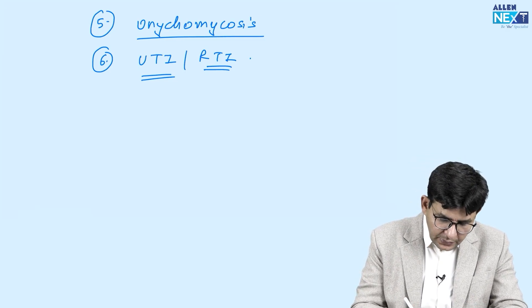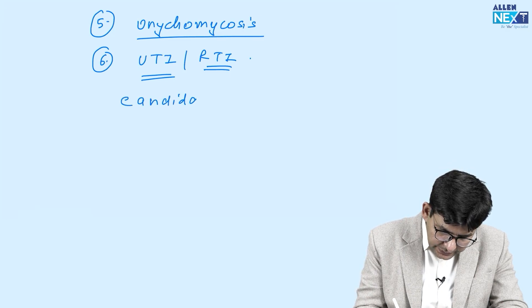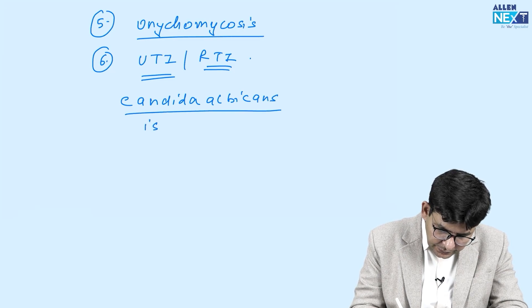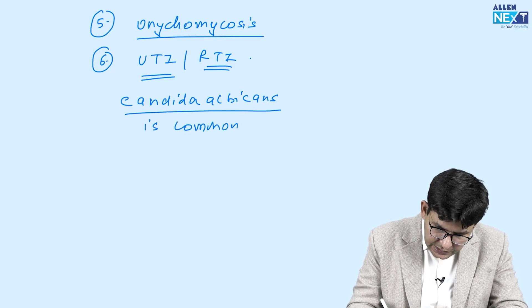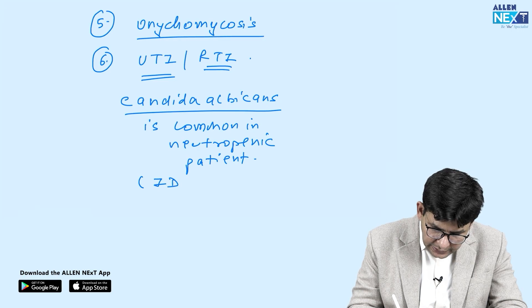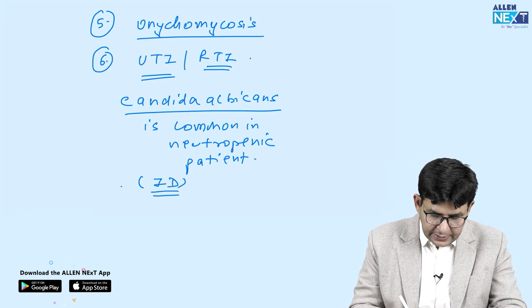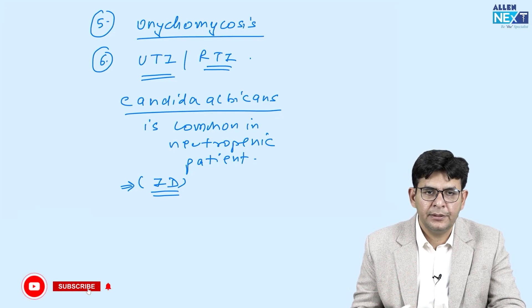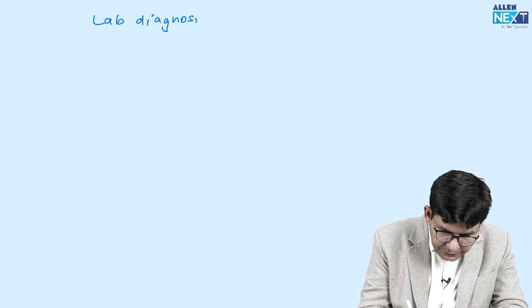Candida albicans is particularly common in neutropenic patients and those who are immunodeficient for any reason — they experience recurrent Candida infections. HIV positivity and neutropenia are major risk factors, along with certain malignancies and steroid use, all of which are associated with Candida infection.